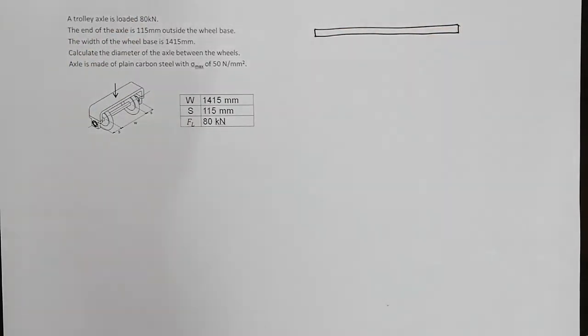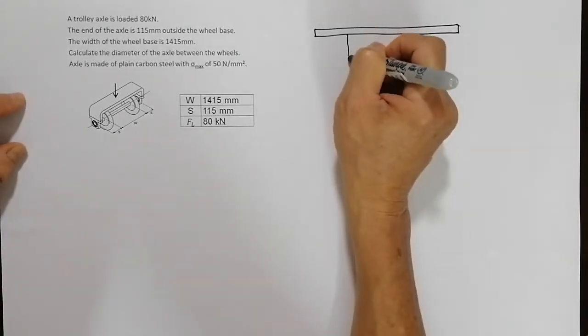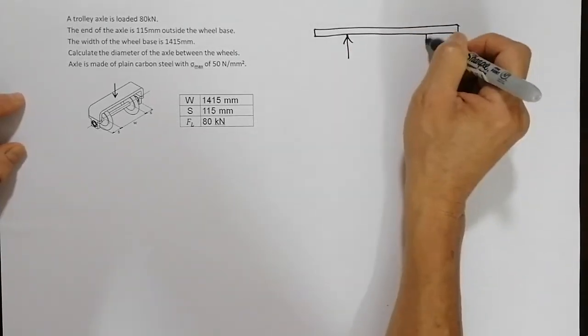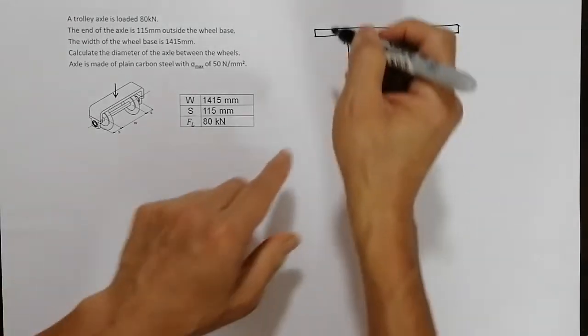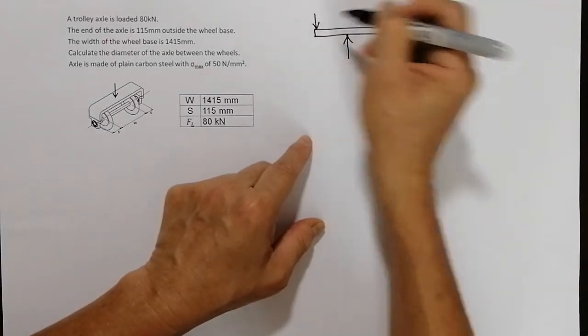Now you realize that the wheel is supported at two sides here, so the wheel is from the bottom here, and the load is at the far end of the shaft, so it will be over here.